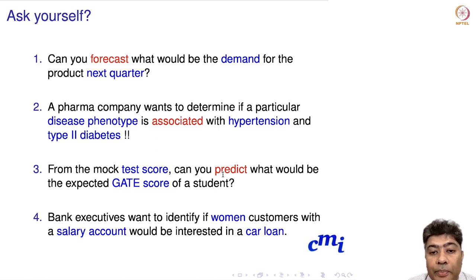The fourth and final question: Bank executives want to identify if a woman customer with a salary account would be interested in a car loan. Here also, association is what we are interested in. In banking and corporate settings, this would be considered a market segmentation problem. You can use simple market segmentation techniques or data-based segmentation techniques to identify if they are interested or not.